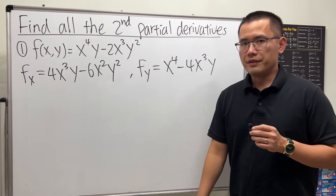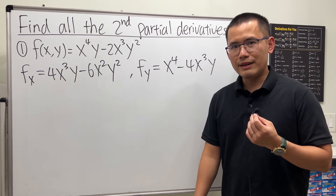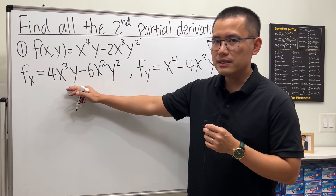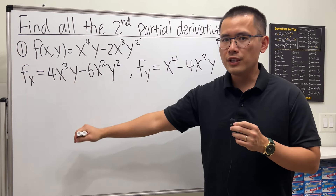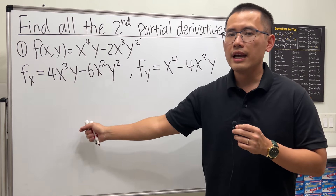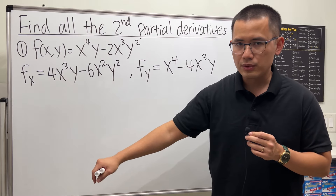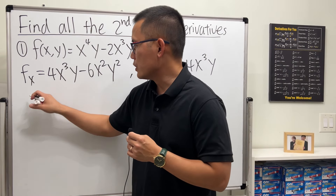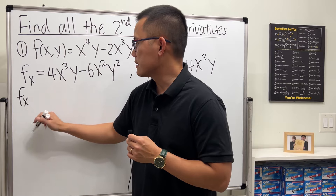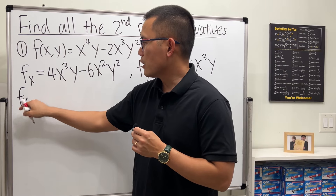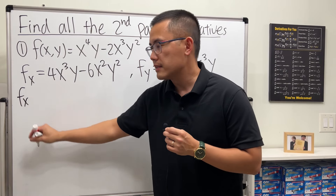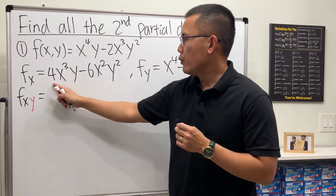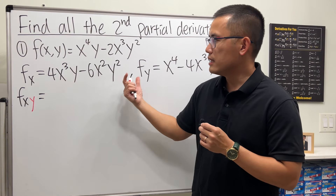Now we have the first derivatives. Next we just have to get the second derivatives by differentiating fx with respect to y and also with respect to x. Let's go ahead and differentiate fx with respect to y. The notation I will use is fxy.